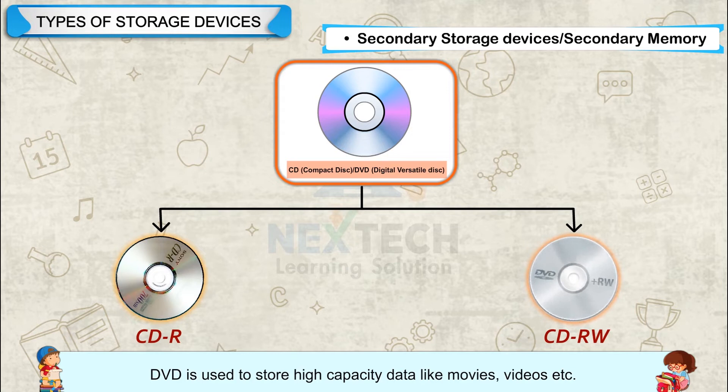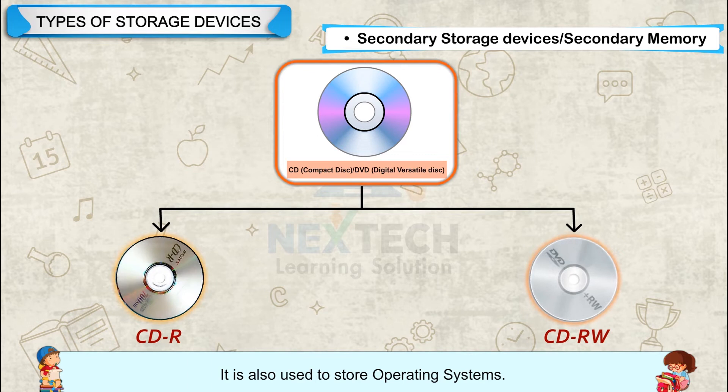DVD is used to store high capacity data like movies, videos, etc. It can store 4.7GB to 17GB of data. It is also used to store operating systems.